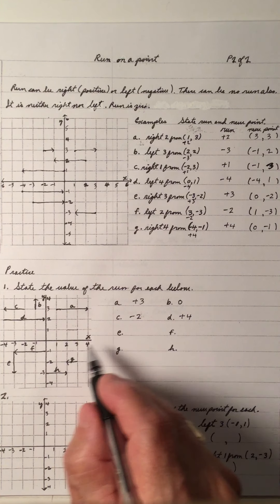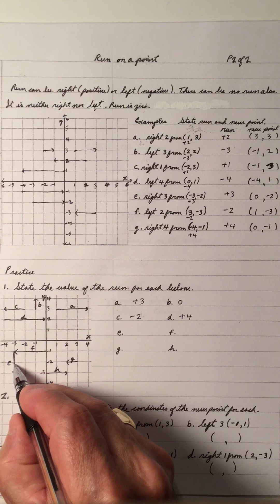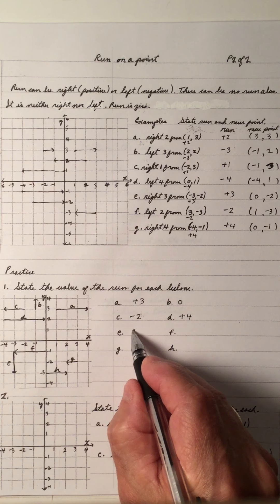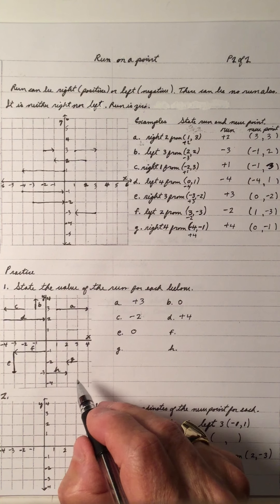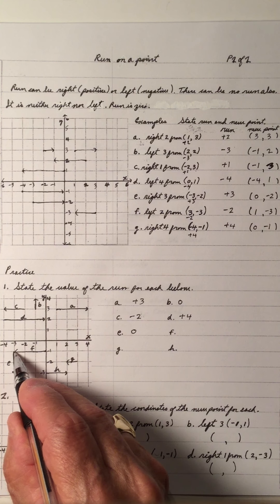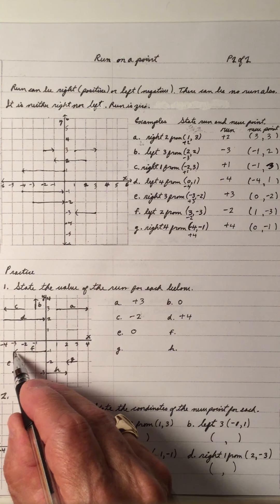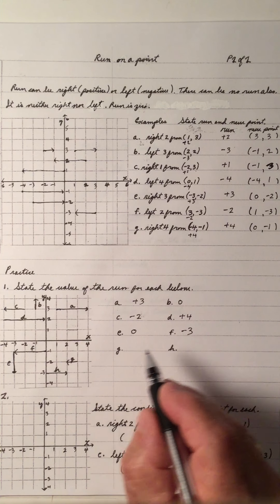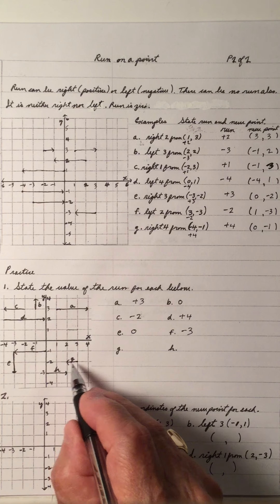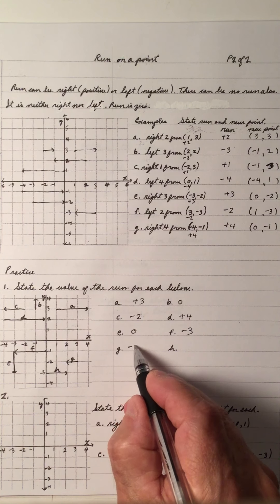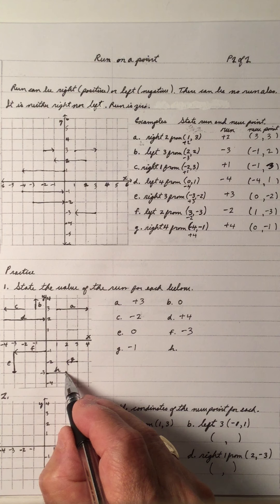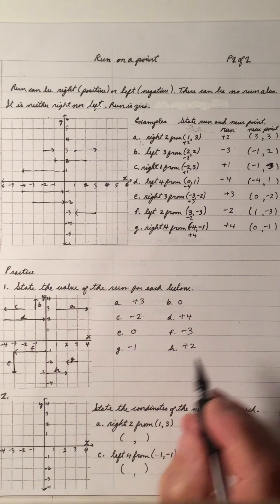E is going down, so it's not left or right — the run is zero. F is leaving here going this way: one, two, three — three left, so it's a minus three. G is leaving here going left one place, so it's a minus one. H is leaving here going two to the right, so it's a plus two.